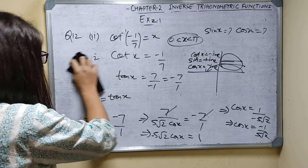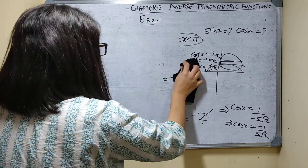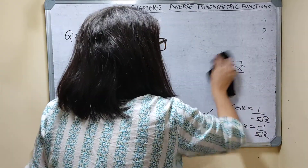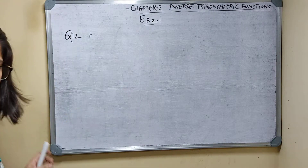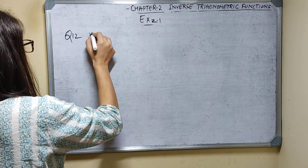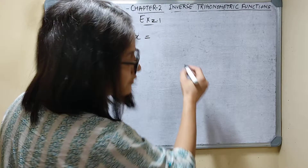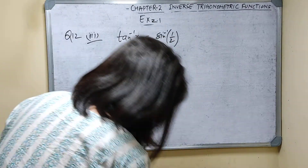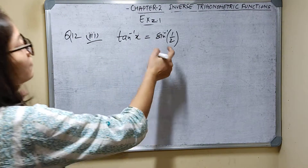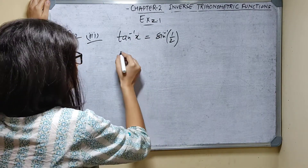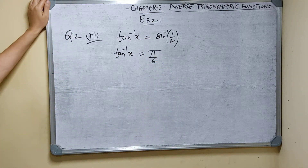Now question number 12, third part. It is: tan inverse x is equal to sin inverse 1 by 2. Sin inverse 1 by 2 means sin value is 1 by 2 for 30 degrees. So tan inverse x equals sin inverse 1 by 2 equals pi by 6. Therefore tan inverse x equals pi by 6.